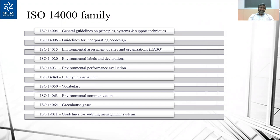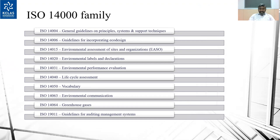As I said earlier, ISO 14000 is not a certificate — it is a series of certifications. ISO 14004 covers general guidelines on principles, systems and support techniques. ISO 14006 covers guidelines for incorporating eco design. ISO 14015 covers environmental assessment of sites and organizations. ISO 14020 covers environmental labels and declarations. ISO 14031 covers environmental performance evaluation. ISO 14040 covers life cycle assessment. ISO 14050 covers vocabularies. ISO 14063 covers environmental communication. ISO 14064 covers greenhouse gases. And ISO 19011 covers guidelines for auditing management systems.